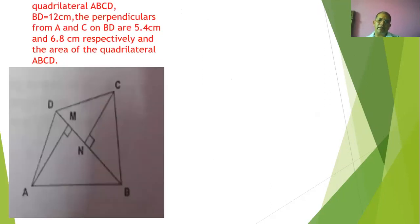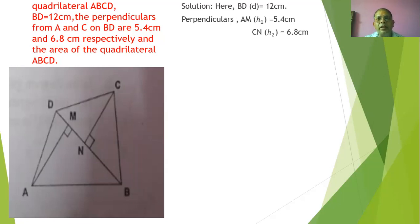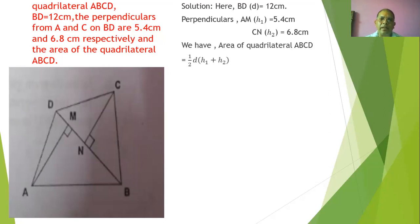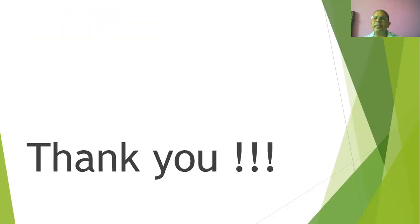Example number seven: in quadrilateral ABCD, BD = 12 cm. The perpendiculars from A and C on BD are 5.4 cm and 6.8 cm respectively. Find the area of the quadrilateral. Area of quadrilateral = 1/2 × diagonal × (h1 + h2) = 1/2 × 12 × (5.4 + 6.8) = 1/2 × 12 × 12.2 = 73.2 cm².